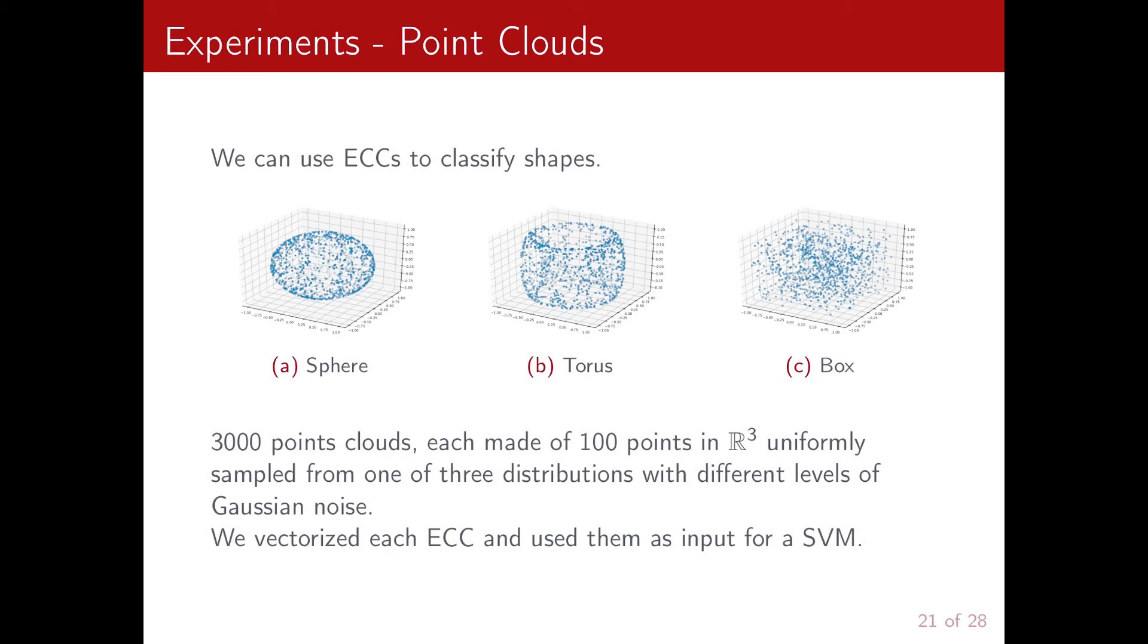And we also added various levels of Gaussian noise. So for each of them, we computed the Euler characteristic curve by constructing a Vietoris-Rips complex up to a filtration value of 0.5. And then we vectorized them by sampling 100 times at constant step size between 0 and 0.5. And we use these vectors as input for a support vector machine classifier.